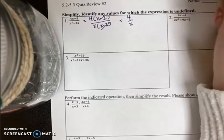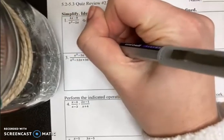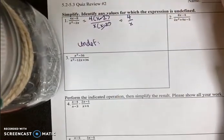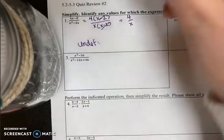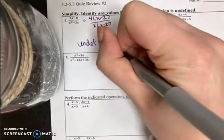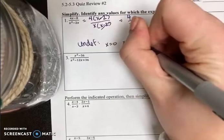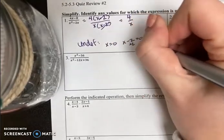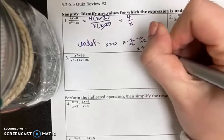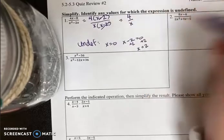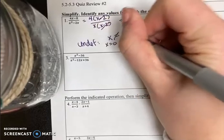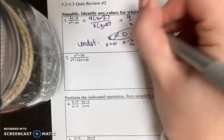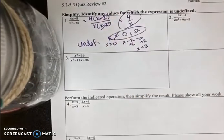Now I do have to identify where it's undefined, and remember that's when the original factored denominator is 0. So when x equals 0 and when x minus 2 equals 0. If you solve for x on each of these, this was already 0 and that was 2, so x cannot equal 0 or 2. So you have two answers for each of these problems.